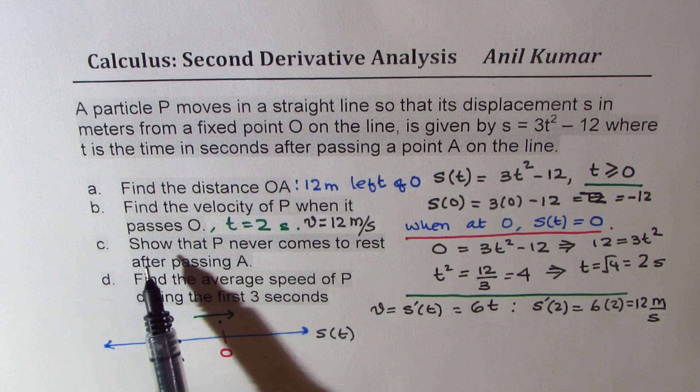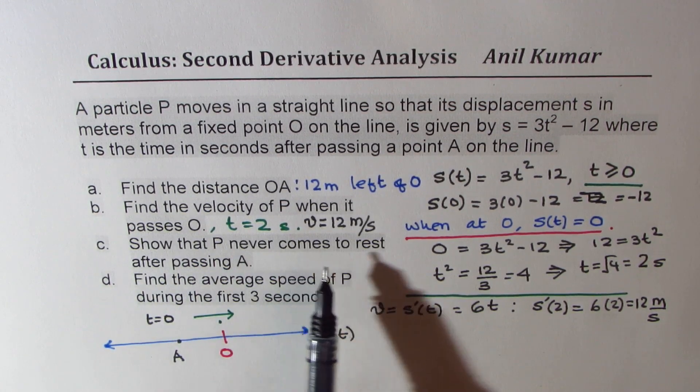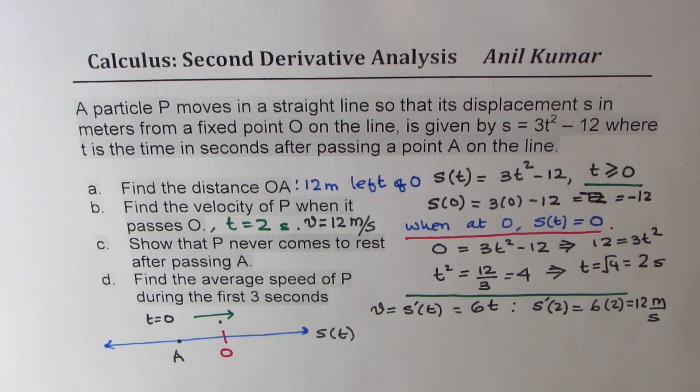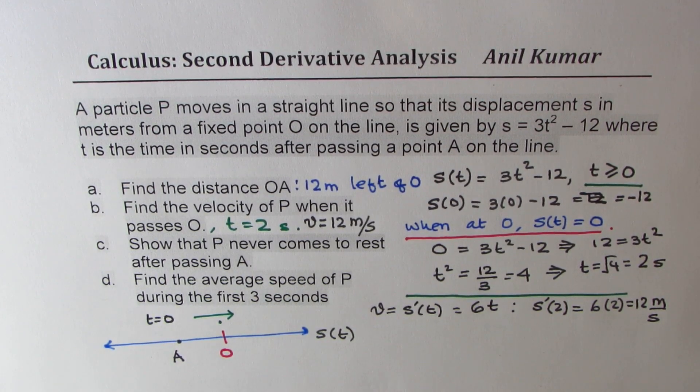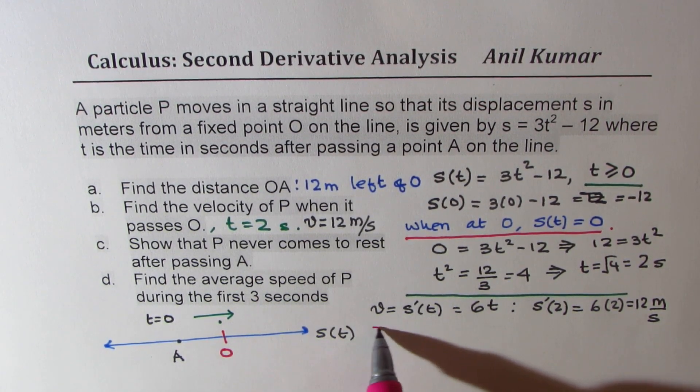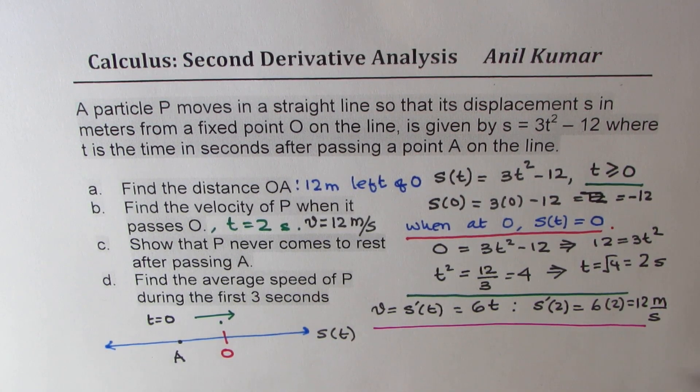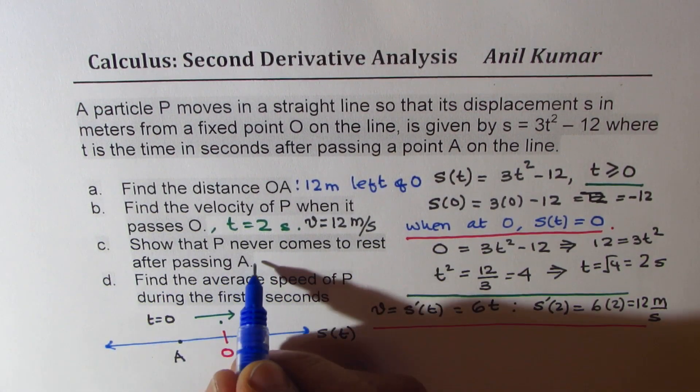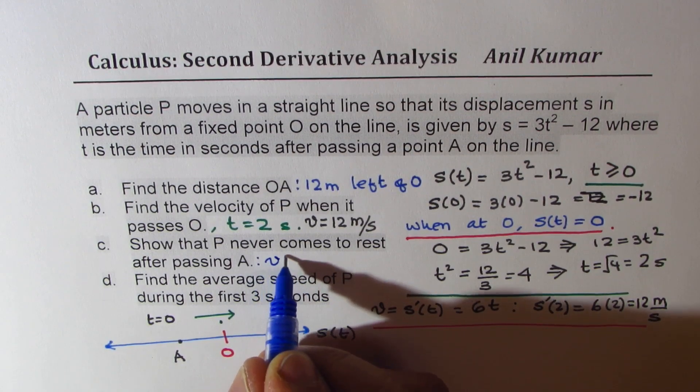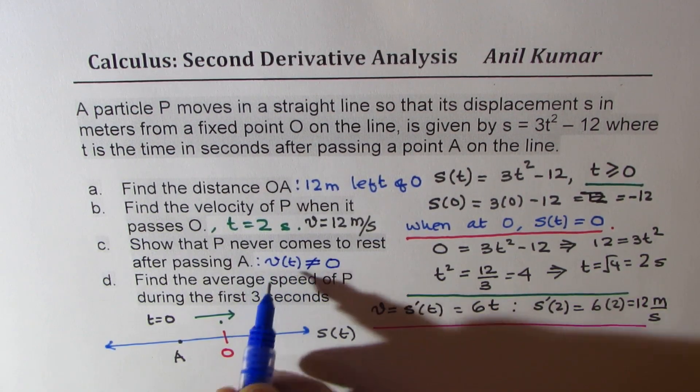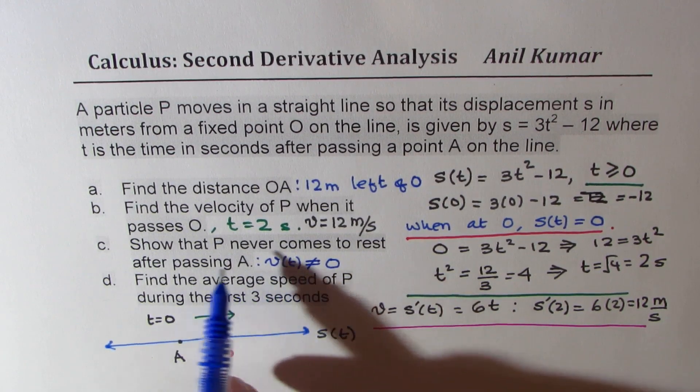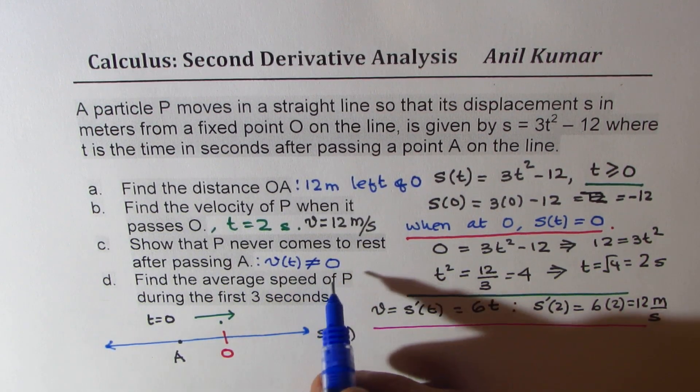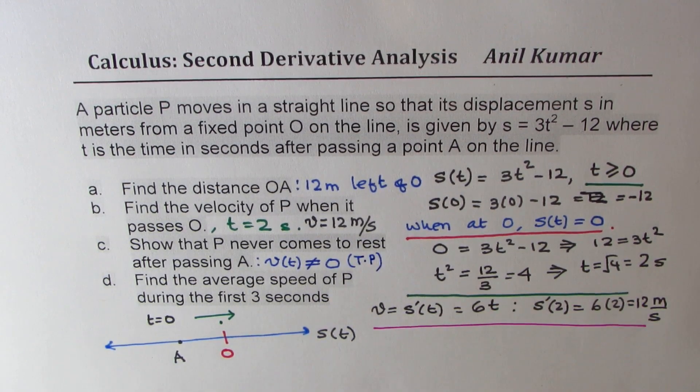Part C, show that P never comes to rest after passing A. Now it never comes to rest means what? Never comes to rest means that velocity is never zero. So when I say that P never comes to rest, that means that the velocity is never equal to zero. When the velocity is zero, only then the particle is at rest. Normally that happens at a turning point. So in our case, we know that the velocity is basically equals 6T.